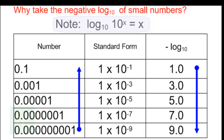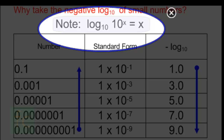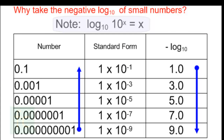Let's take a few moments to consider the benefit of taking the negative log to the base 10 of these small numbers. The log to the base 10 of 10 to the power of any number x is simply x — for example, the log of 10 to the power of 4 is simply 4. So let's see how that becomes a benefit when dealing with these small numbers.